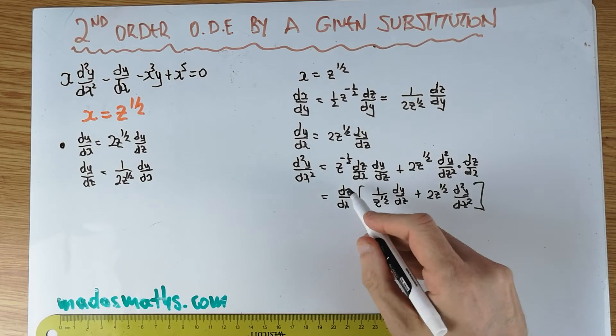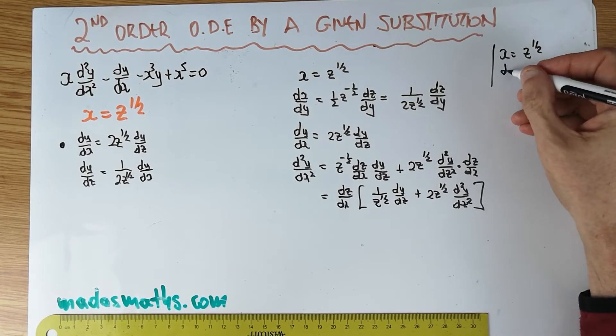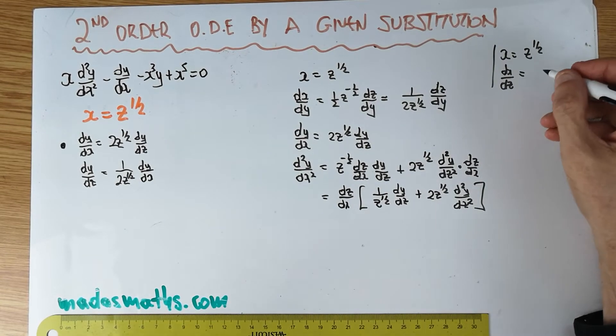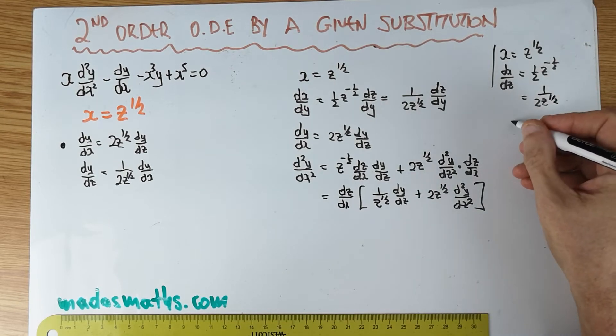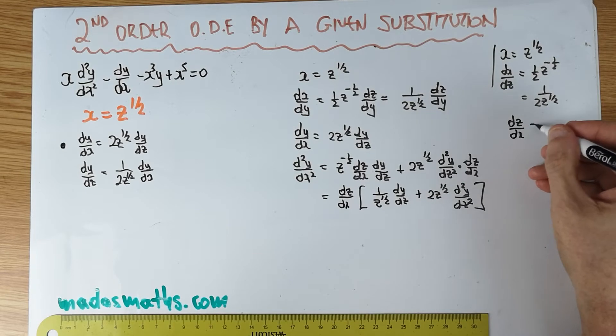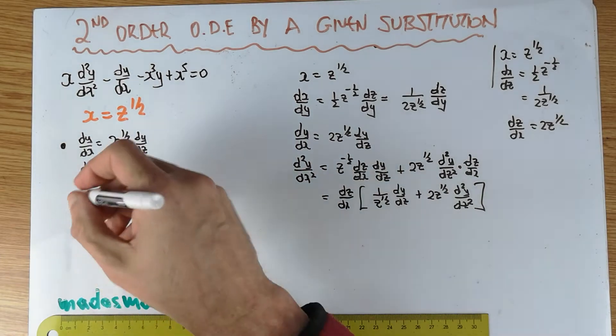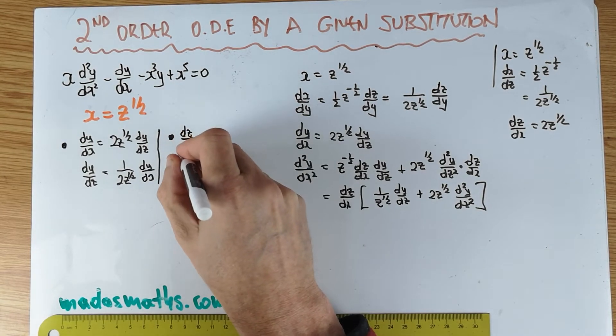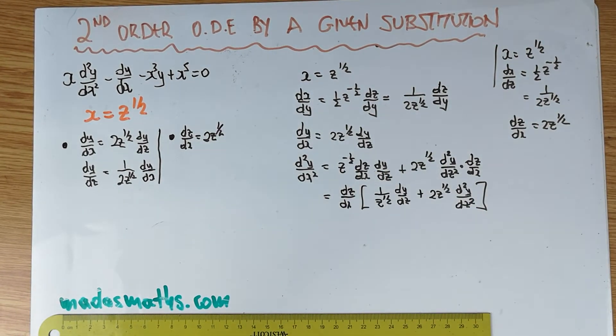What can we do in there? First of all, dz by dx. Well, I'm going to write it here. x is z to the half. This is very easy. dx by dz, I'm only upside down of course, is a half z to the minus a half, which of course is 1 over 2z to the half. So my dz by dx, I'm flipping it, is 2z to the half. So let's write this as well somewhere on the side here, just in case we need it or there's a mistake. I want you to be very organized with this. Let's make some space.